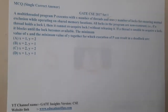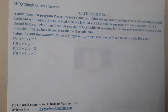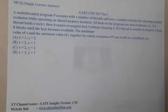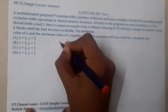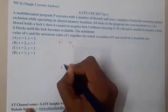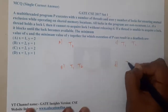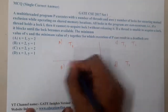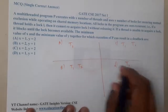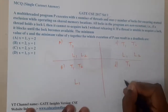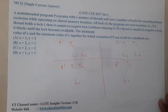Looking at the options: Option A has only one thread. Option B has two threads T1 and T2. Option C has two threads T1 and T2. Option D has only one thread T1. For locks: Option A uses L1 and L2, Option B uses only L1, Option C uses L1, and Option D uses only L1.